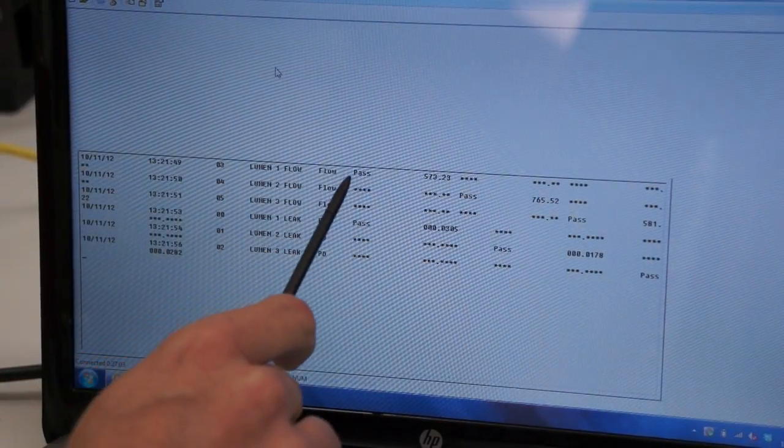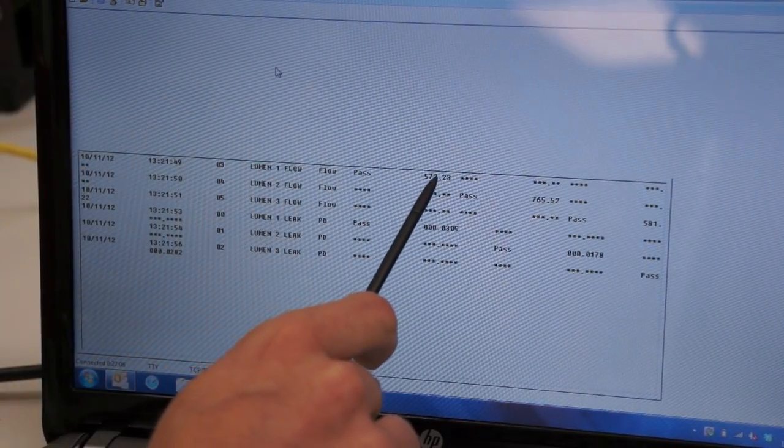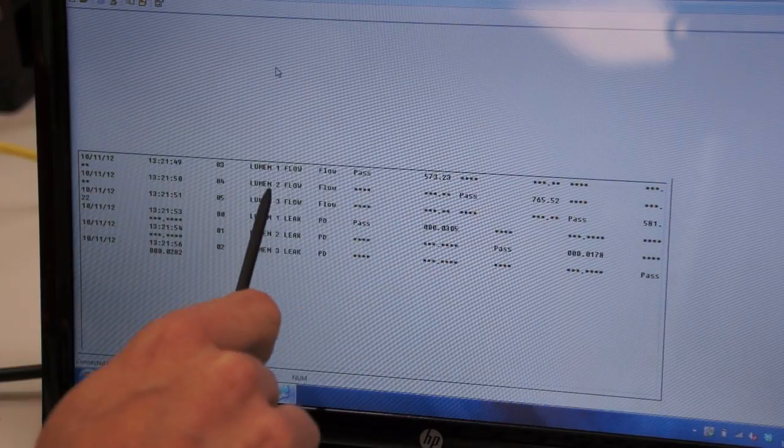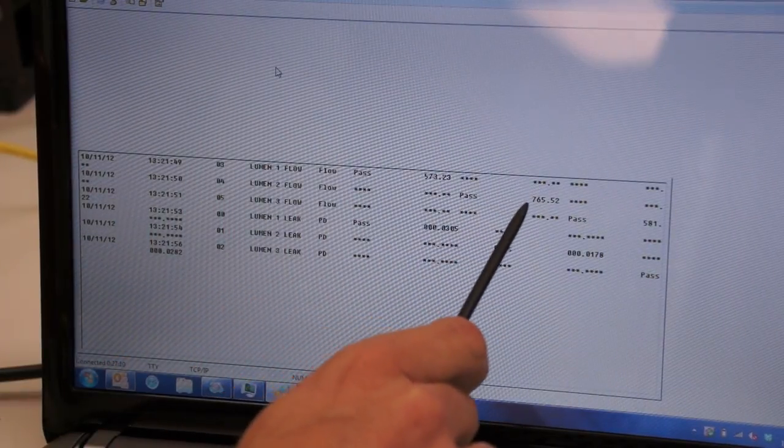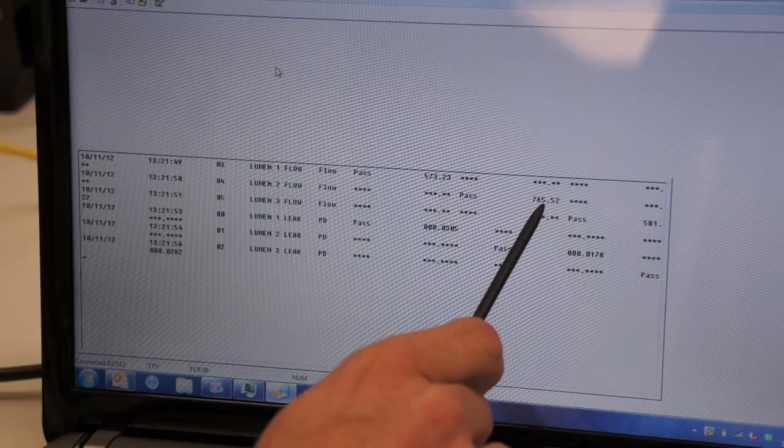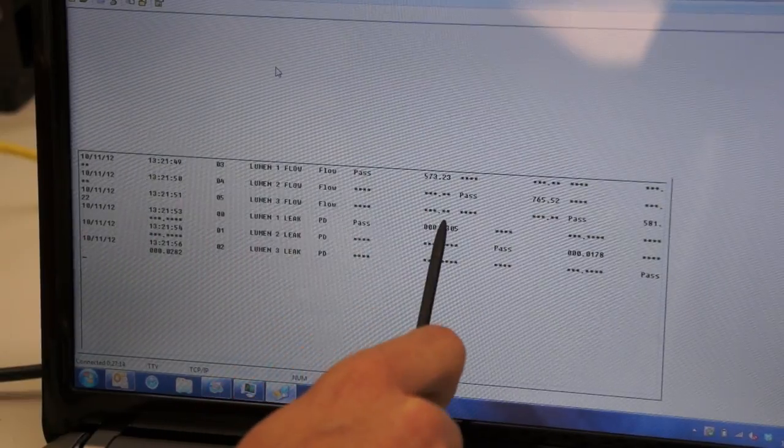Lumen 1 flow was a pass. We recorded 573 cc's. Lumen 2 was a pass. We recorded 765 cc's. Lumen 3 was a pass, and we recorded 581 cc's.